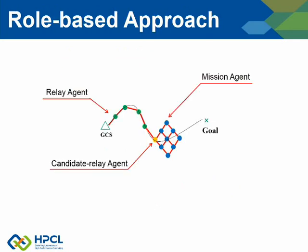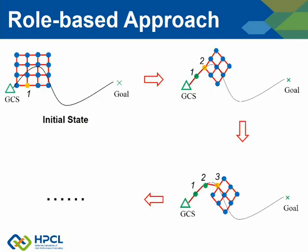We propose a role-based approach and design three basic roles: Mission Agent (MA), Relay Agent (RA), and Candidate Relay Agent (CA). MA and RA are easily understood. CA is a transition role between MA and RA. CA moves with mission agents and monitors the communication link with relays.